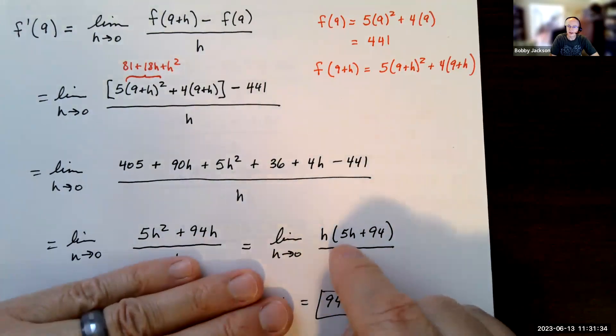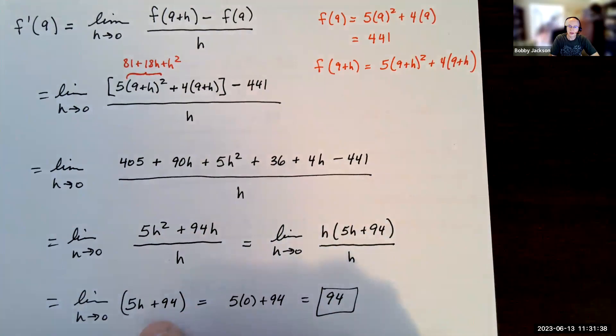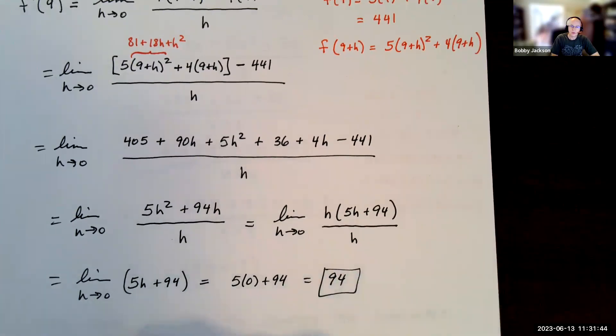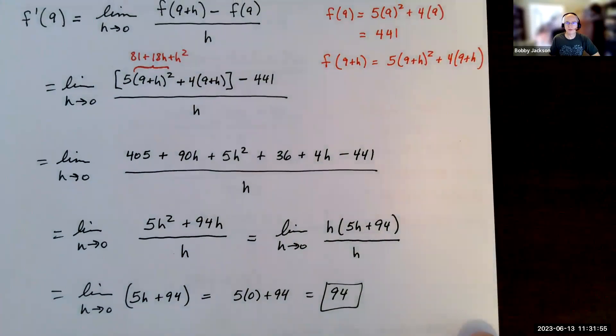So I'm looking at the limit as h goes to zero of 5h plus 94, which is continuous at h equals zero. So now I can plug in directly and I get, of course, 94. So that's the way we evaluate and find the derivative at a point using the limit definition.